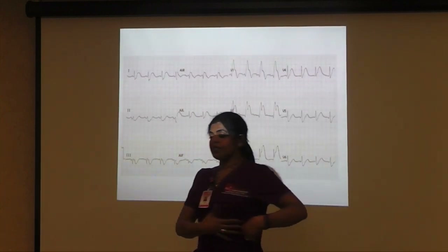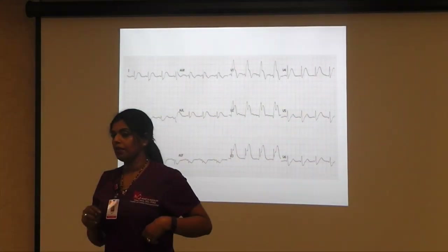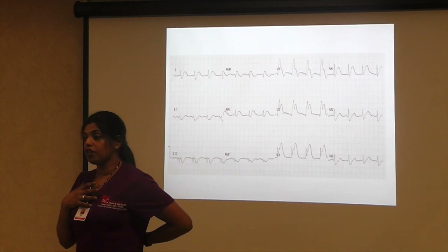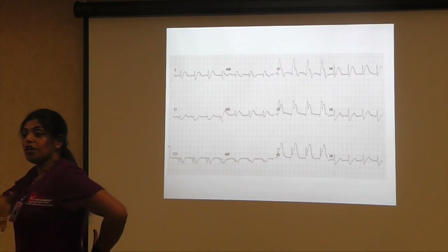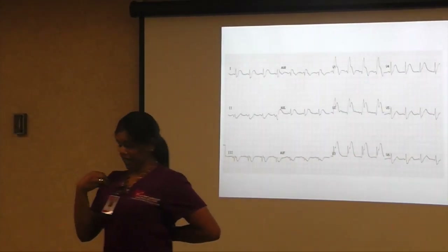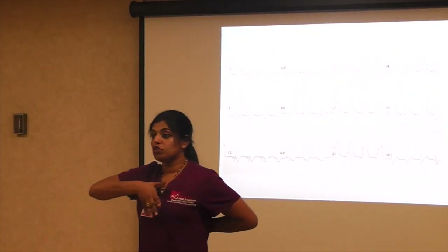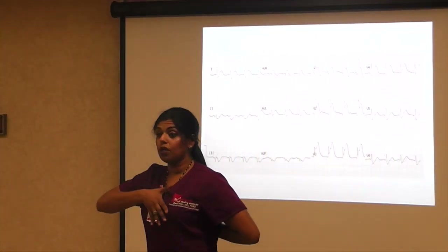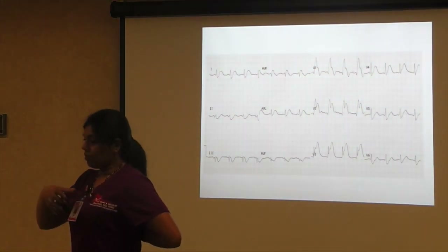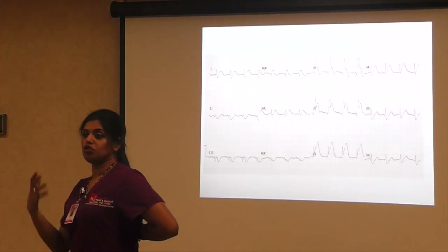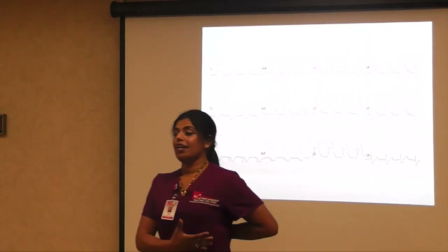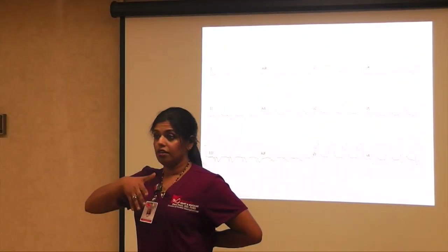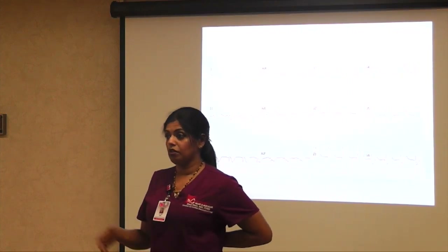These precordial leads usually don't have reciprocal changes except for one situation: the posterior wall. We don't put leads on the back of the heart, so V1, V2, V3 sit right across from the posterior left ventricle. ST depression in V1, V2, V3 is equivalent to ST elevation in the posterior wall — that is a posterior ST elevation MI. Posterior STEMI usually accompanies an inferior STEMI, so when you have inferior ST elevation, always check V1-V3 for ST depression to identify posterior involvement.